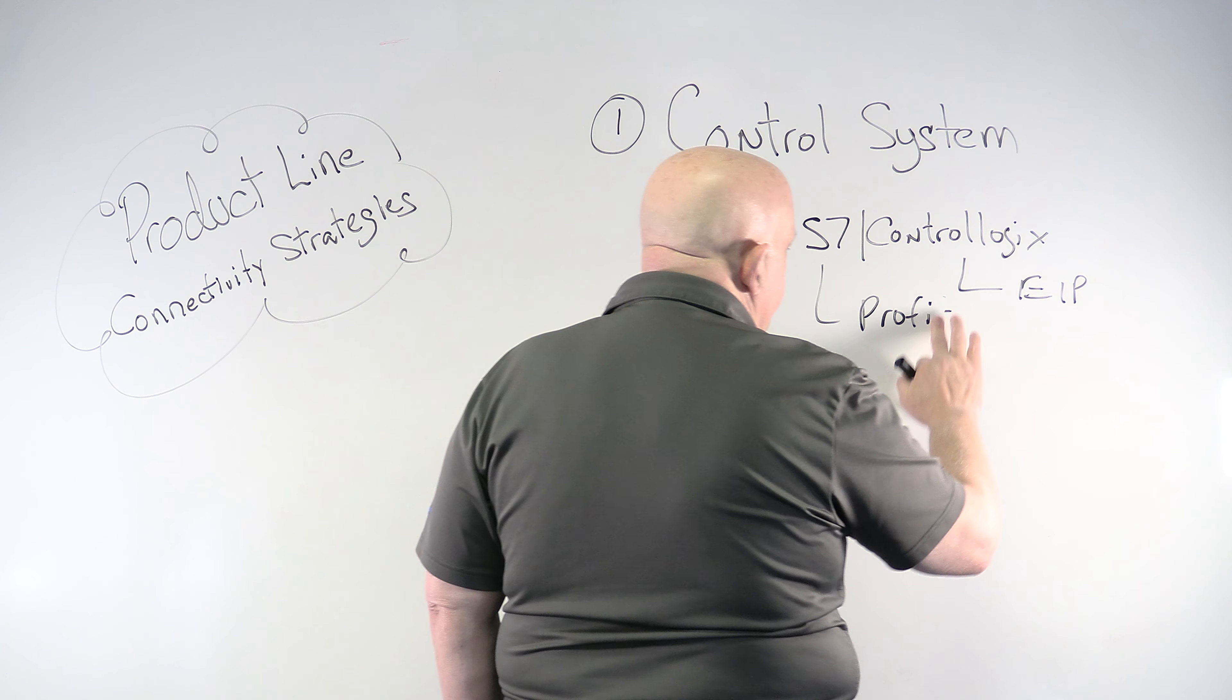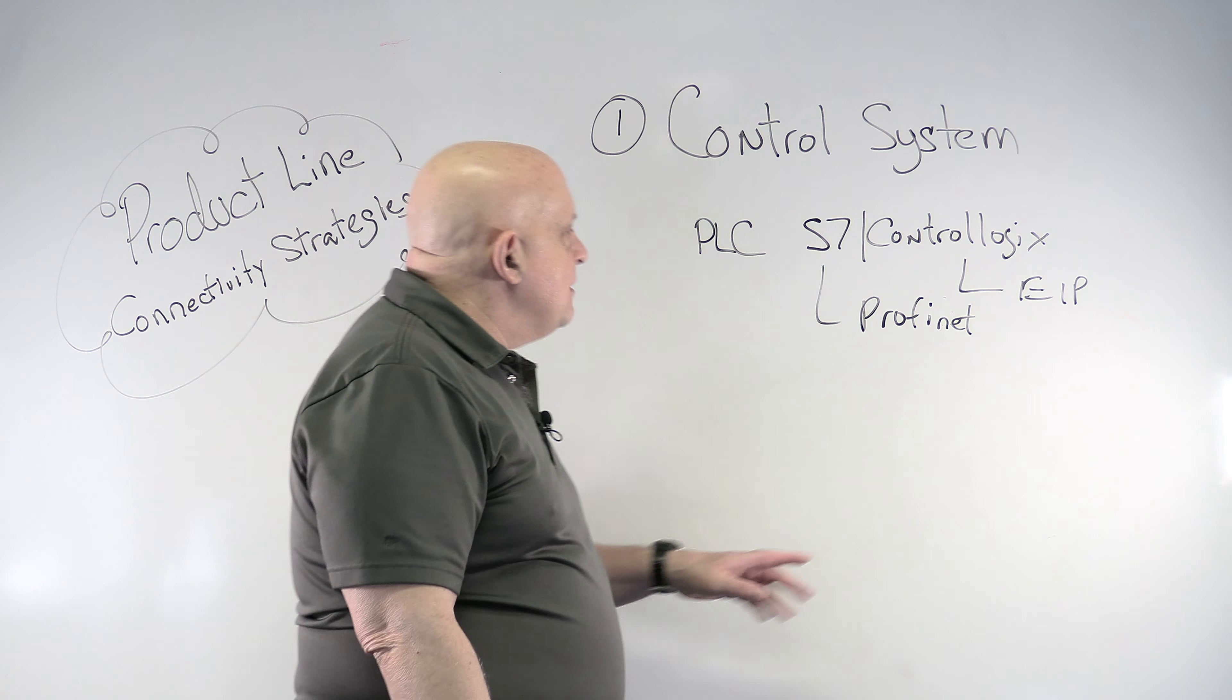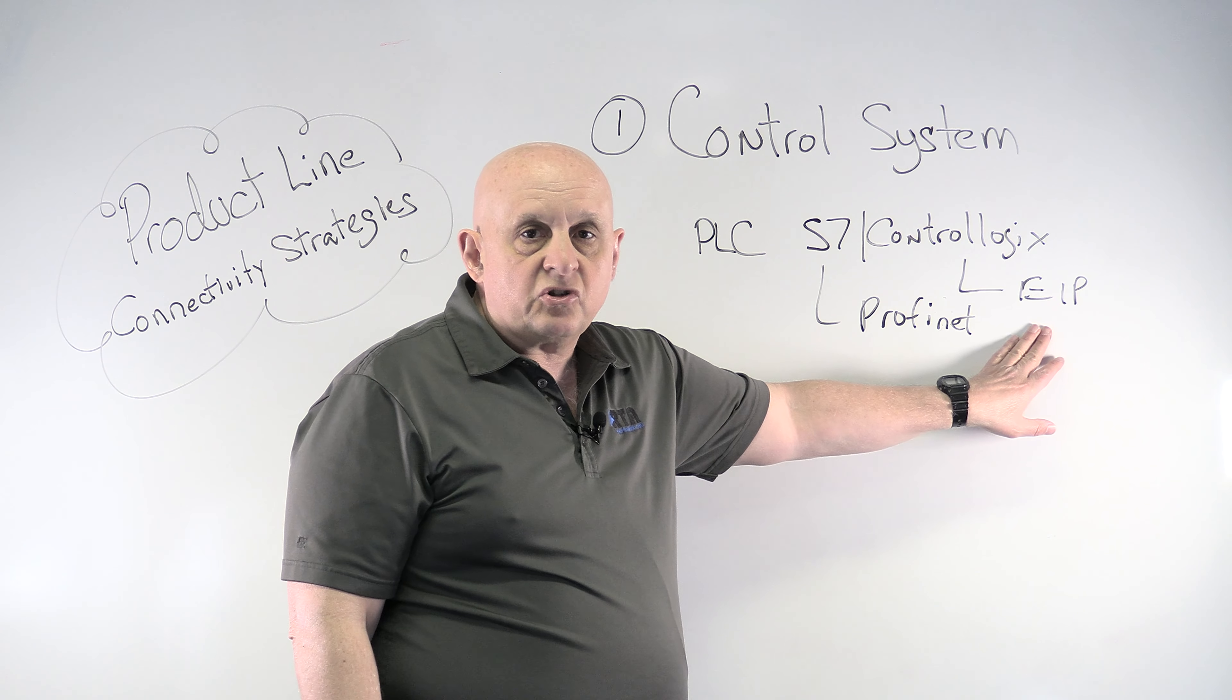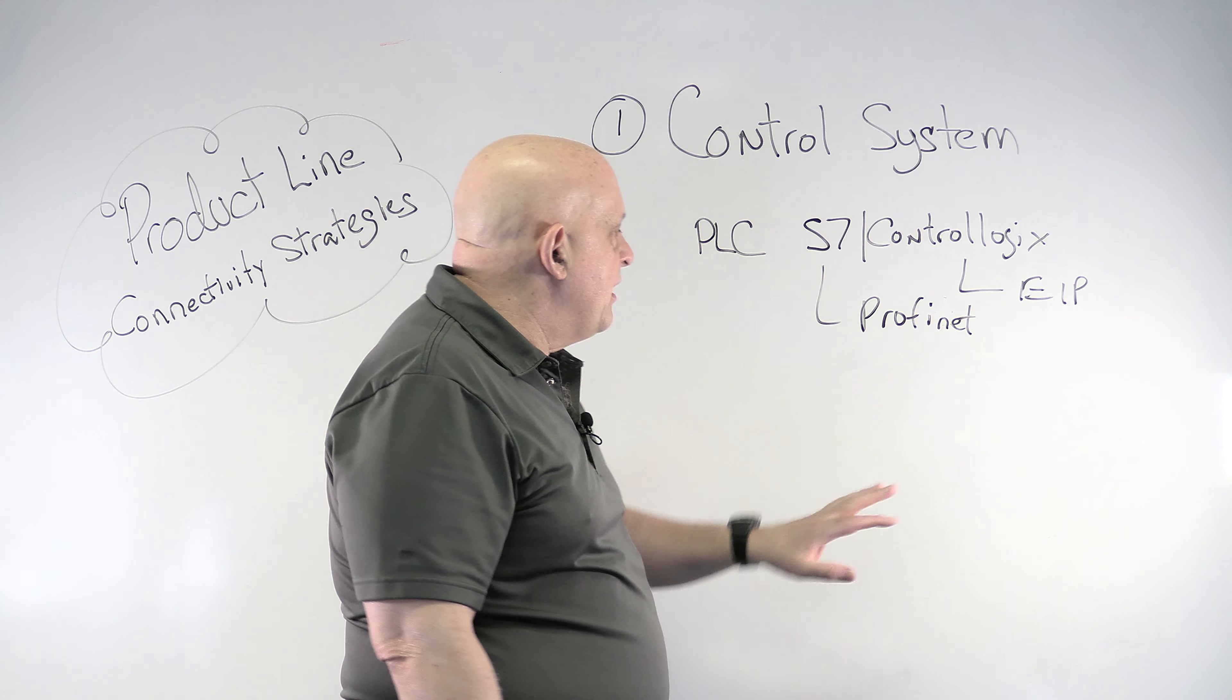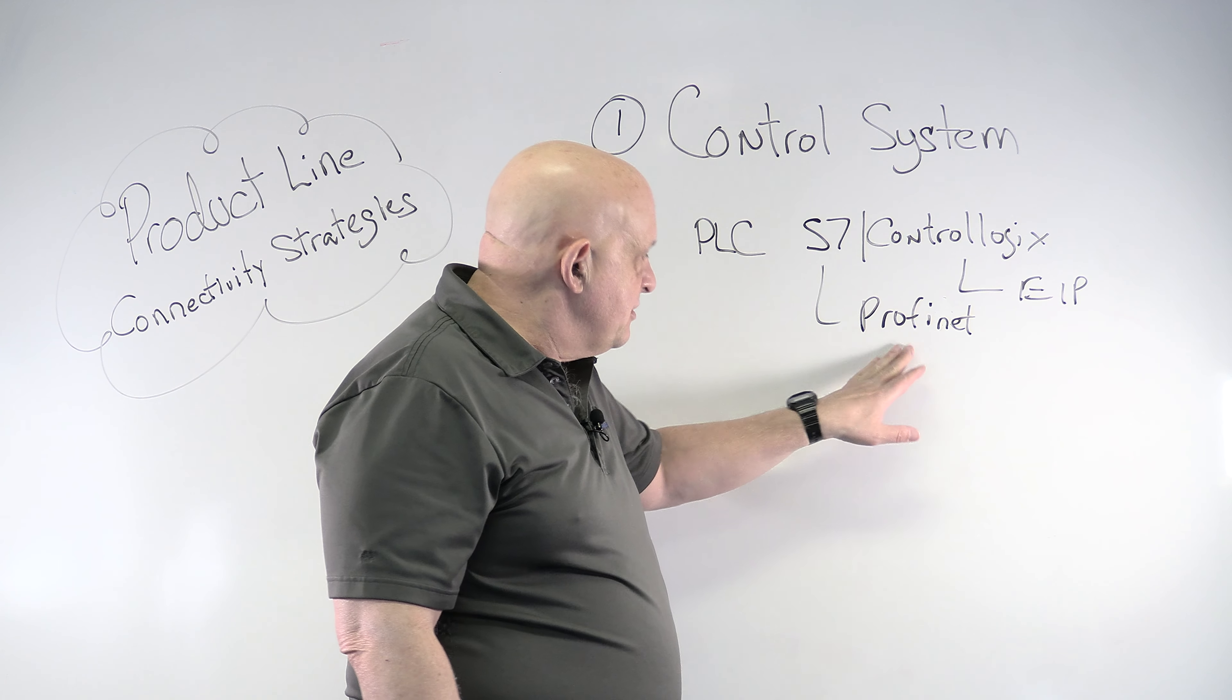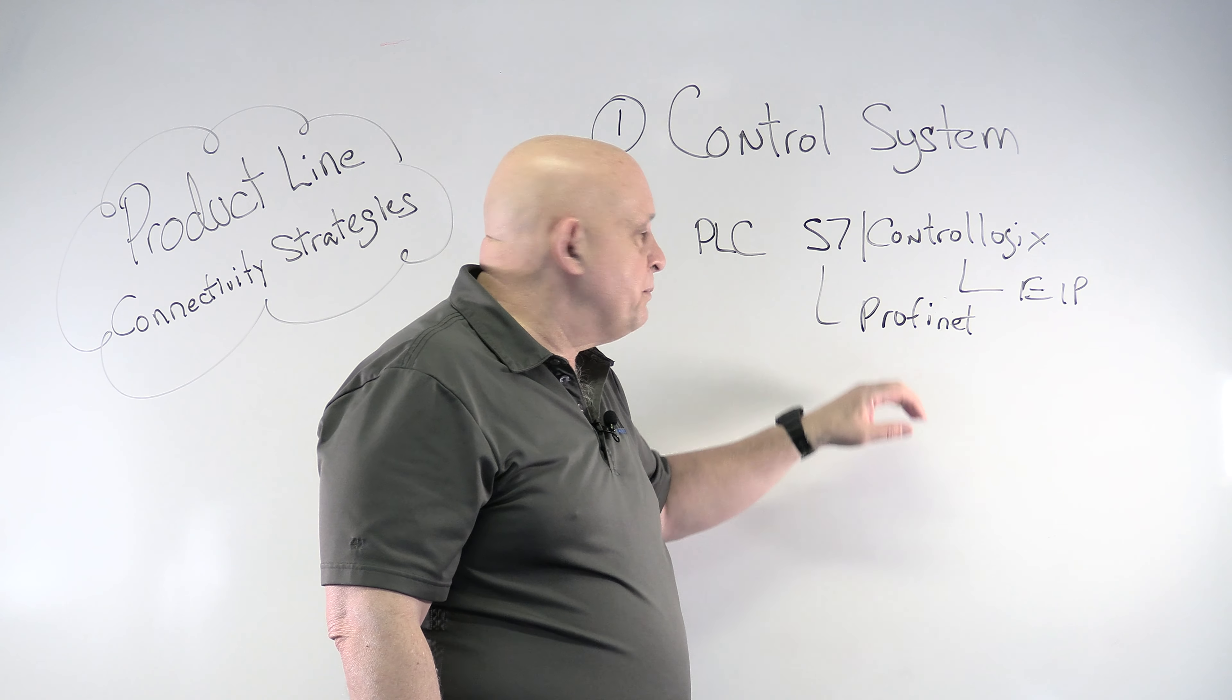Now, the thing about Profinet, oops, I spelled Profinet wrong, Profinet. So the thing about this is that Ethernet IP is rather small, easy to put in software. So if you have a small controller, you can get that. Profinet's a lot larger, takes a lot of resources to implement Profinet. It also takes, you need to have an operating system like a Windows or a Linux to do Profinet.